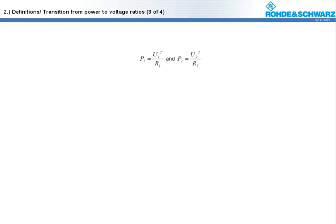We all know that a power level can be expressed by the squared voltage divided by the resistance. If you replace P1 and P2 by this formula, you will get the following term. Using the familiar rules of logarithmic calculation, we can transform it like this.